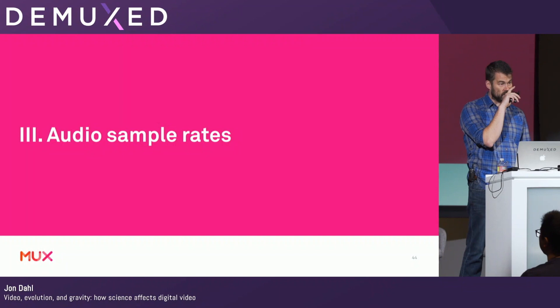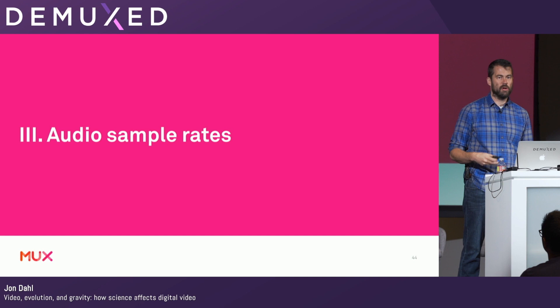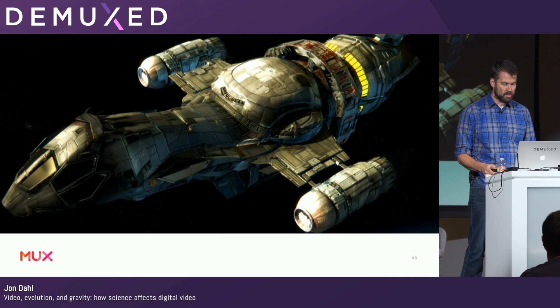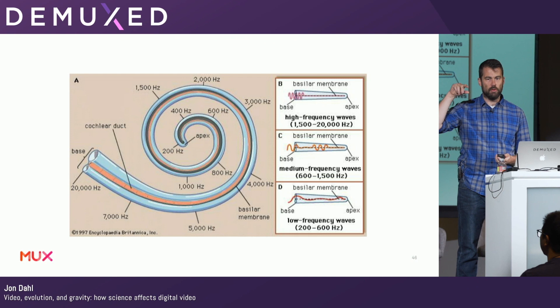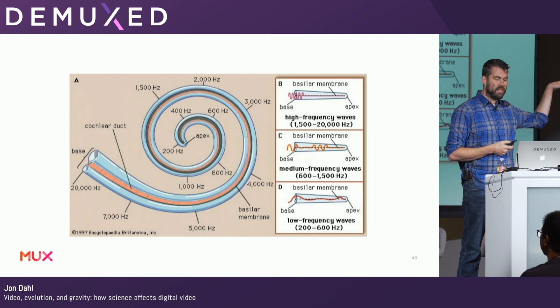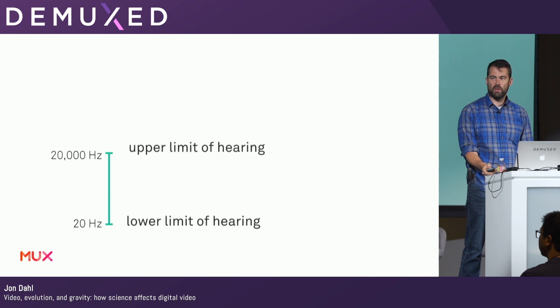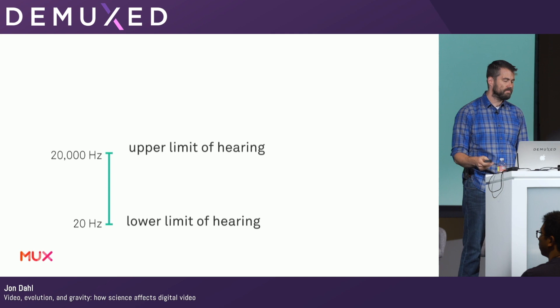Third topic moves on to hearing — we're going to talk about audio sample rates. Sound is a matter of pressurized waves, vibrations that happen in a medium like air, water, or solid. There's no sound in a vacuum, as we know from Firefly, and not from most other science fiction shows. We hear through the cochlear duct, which sits in our inner ear — a little spiral filled with fluid and little hairs that sense vibrations. It starts at about 20,000 hertz and goes down from there. The upper limit of human hearing is generally about 20,000 hertz, and the lower limit is about 20 hertz — even lower than the lowest note on a piano, which is about 28 hertz.